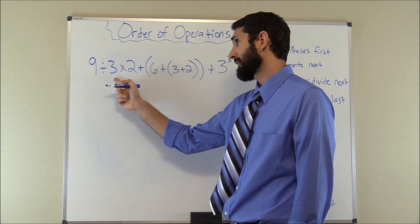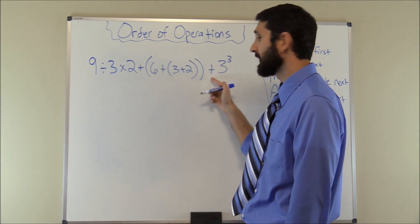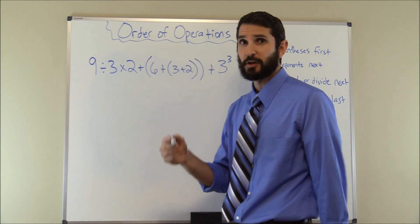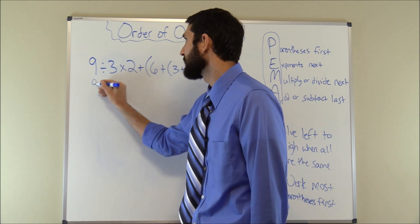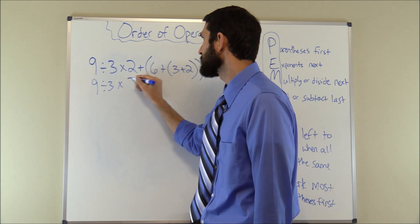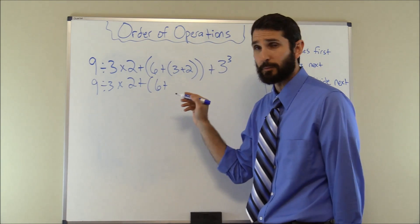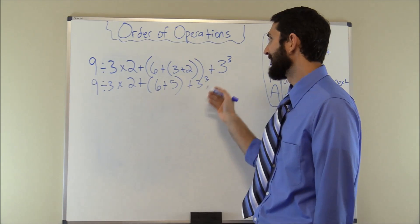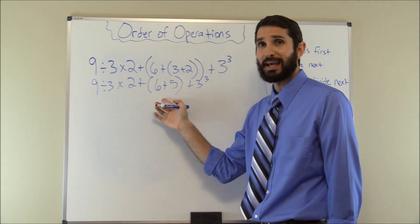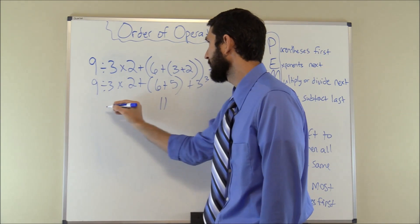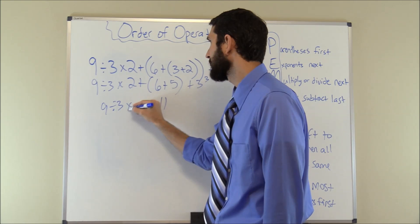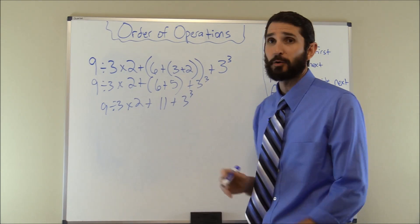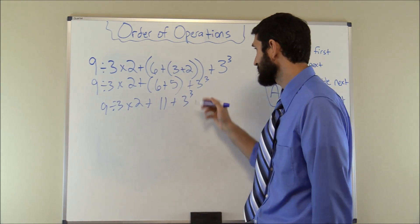For our last problem we have: 9 ÷ 3 × 2 + 6 + (3 + 2) + 3³. Following our mnemonic PIMA, parentheses come first. We solve the innermost parentheses: 3 + 2 = 5. Our problem becomes 9 ÷ 3 × 2 + 6 + (6 + 5) + 3³. We solve the remaining parentheses: 6 + 5 = 11. The problem is now 9 ÷ 3 × 2 + 11 + 3³. Now we do exponents next.